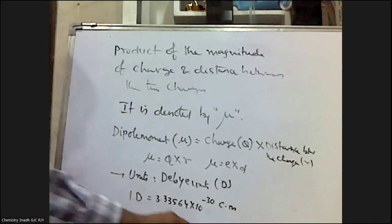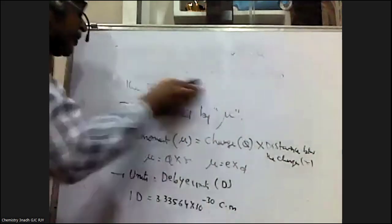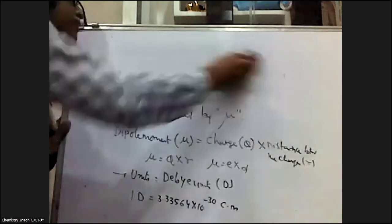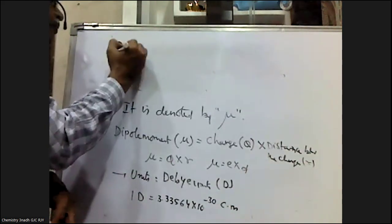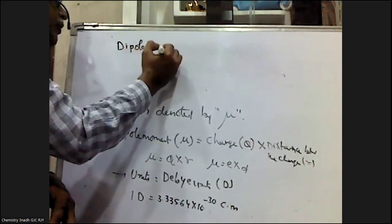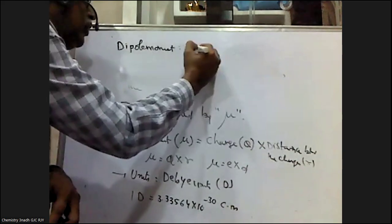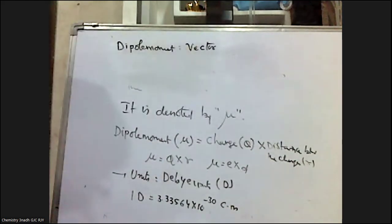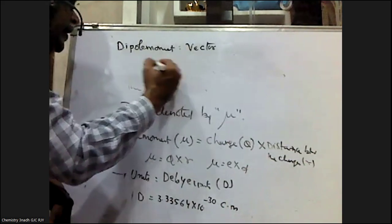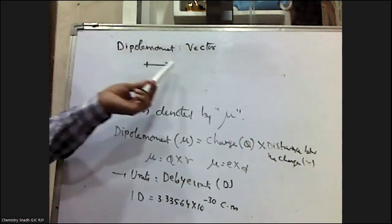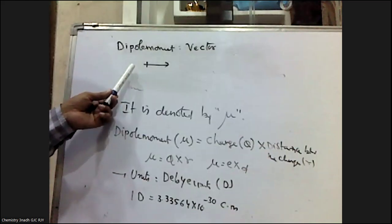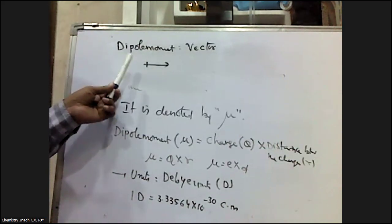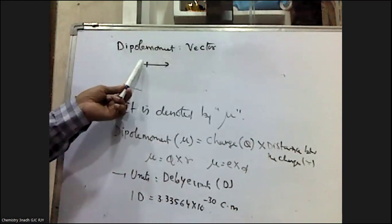Dipole moment is a vector quantity. Vectors have both magnitude and direction, whereas scalars have only magnitude. Dipole moment is represented as an arrow pointing from the positive charge to the negative charge — that is, from positive to negative.